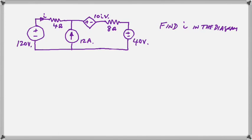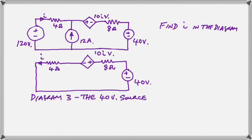Once again, we reproduce our original diagram so you can see the changes, and we draw diagram three for the 40-volt source. Now, notice we have just disappeared the 12-amp entirely, and we have replaced the 120 volts by a piece of wire. So we end up with a very simple loop, which will be very easy to solve.